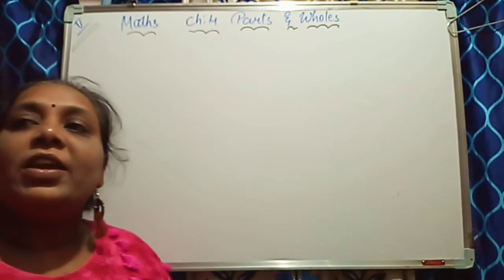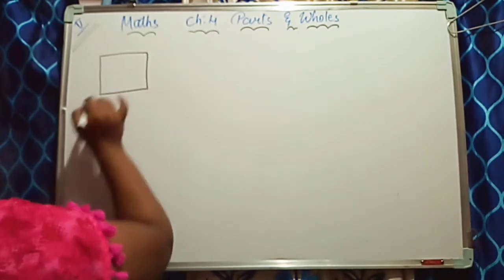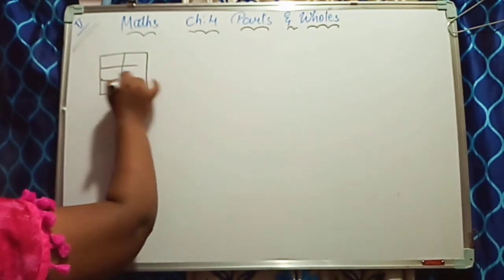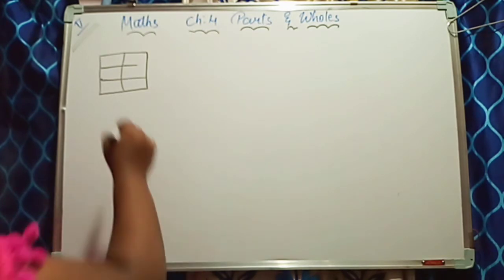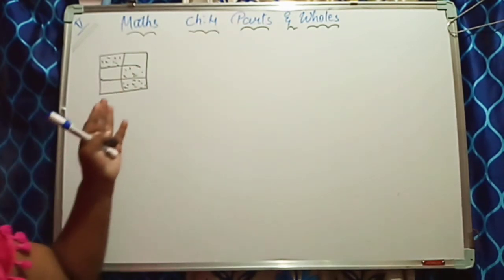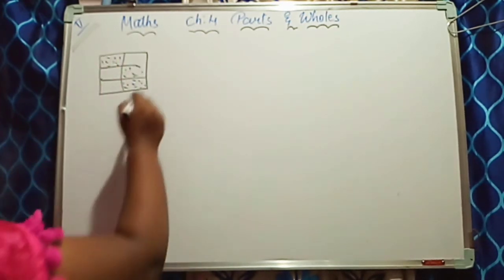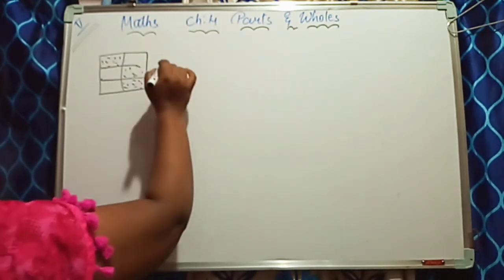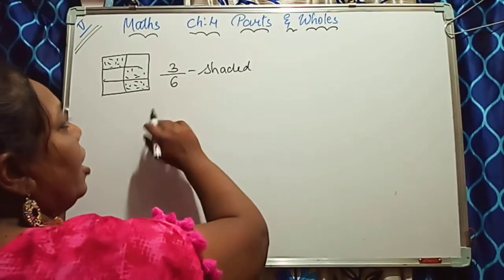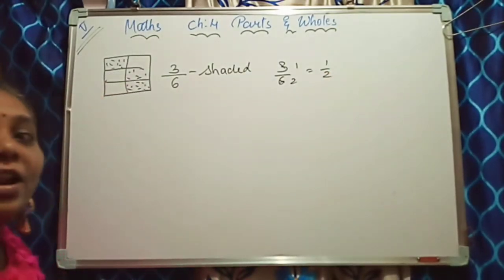The question is: State what part of the figure given below is shaded. This is a square. I have made one half part here, giving one, two parts, and the square is divided into six equal parts — one, two, three, four, five, six. The shaded parts are one, two, three. So three is the shaded part. We can write three upon six. Three upon six means three divided by three over six divided by three, that is one upon two — half part. We can also write it as one half.